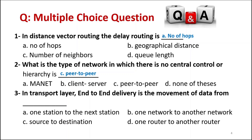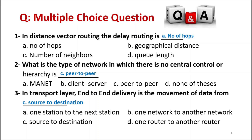In the transport layer, the end-to-end delivery is the movement of data from source to destination. The transport layer provides end-to-end delivery because it sits above the network layer, which requires the IP addresses of both source and destination. Therefore, the transport layer also matches this requirement: end-to-end, source to destination.